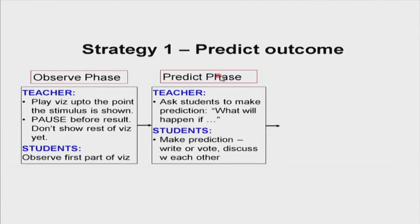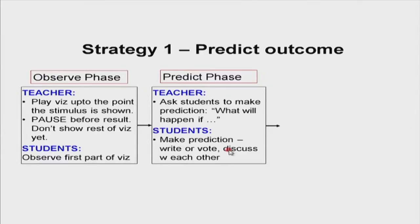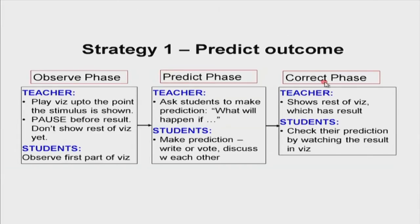In phase two — the predict phase — the teacher asks questions to prompt a prediction: what will happen if the man gives a push to the left? What happens to the balloon? Students make their prediction. You can have students write in their notebooks individually, or do a poll with options such as 'the balloon moves left, right, or stays the same.' This is the most important phase, where students are doing the prediction — note that the visualization is paused at this moment.